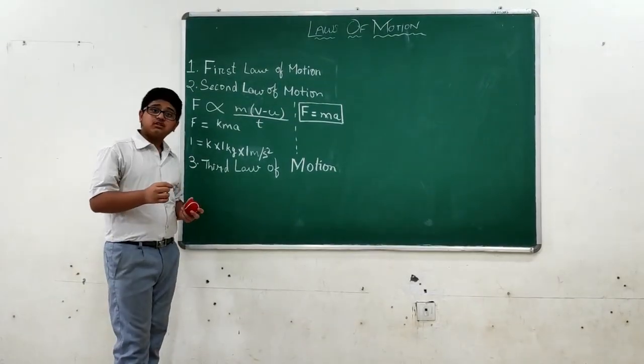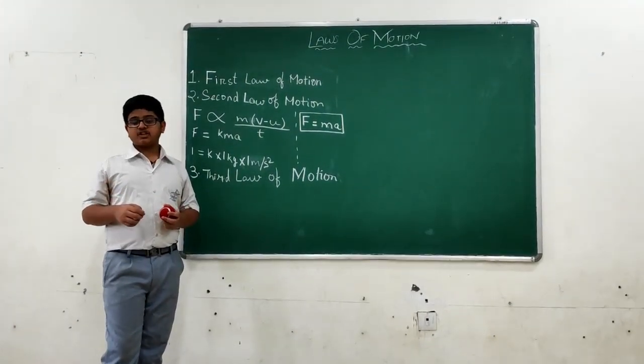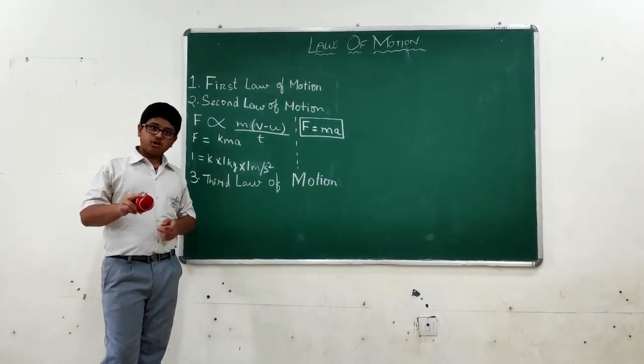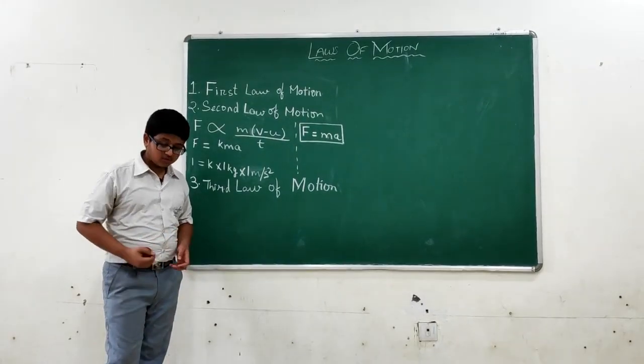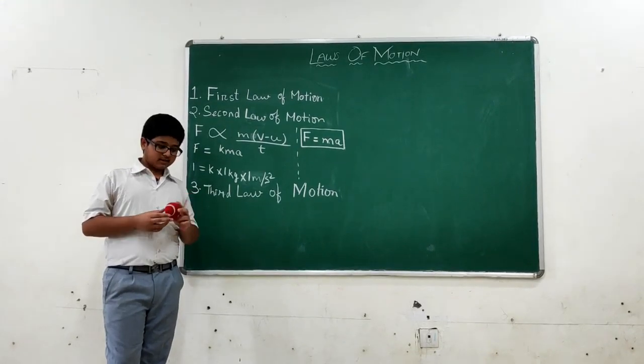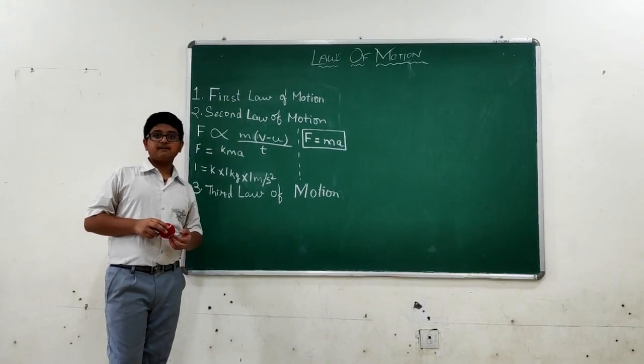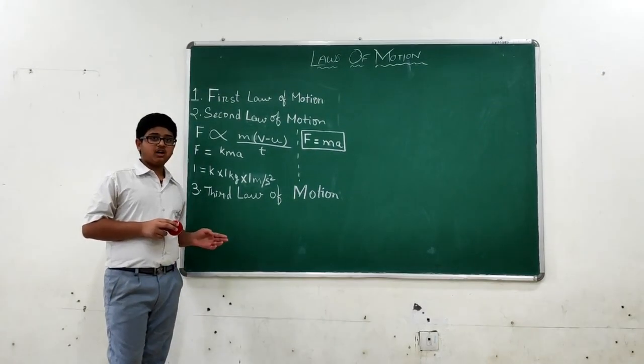Third law of motion. For every action, there is equal and opposite reaction. If I throw the ball on the ground, it will come back with the same reflection. Why? Because the force it has exerted to the ground, the ground reacts with the same force. This is the third law.